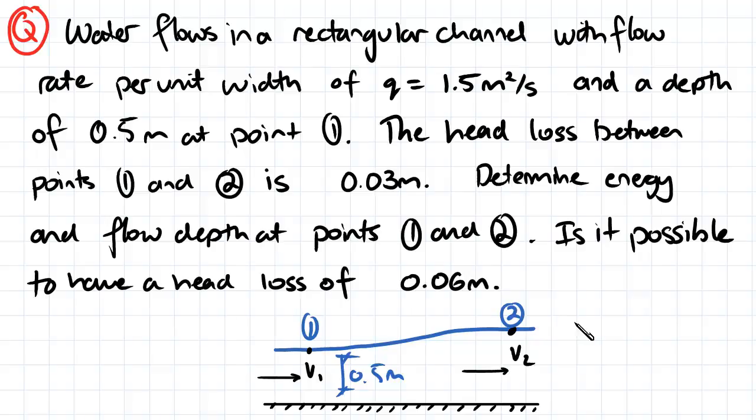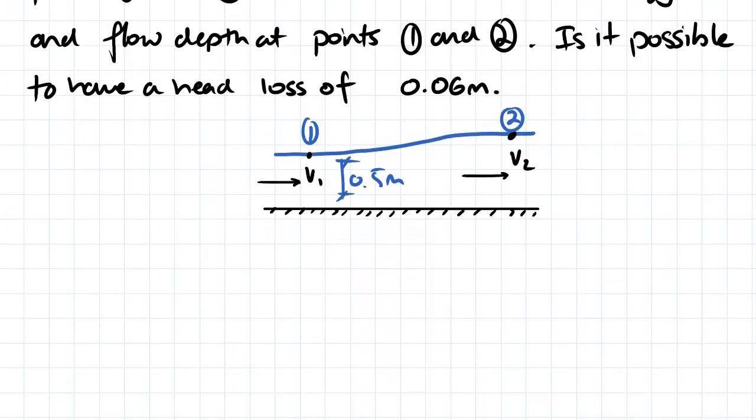So the first thing: this flow here is going to be governed by the Bernoulli equation. So what we know is that P1 over the unit weight, the pressure divided by the unit weight, plus our velocity V1 squared over 2g.